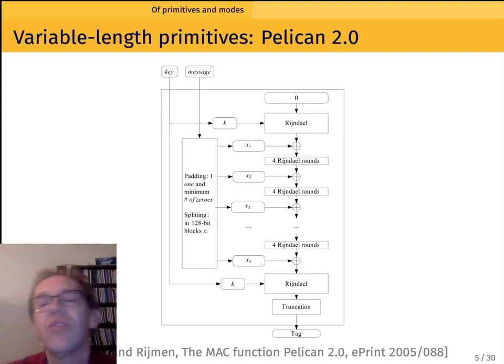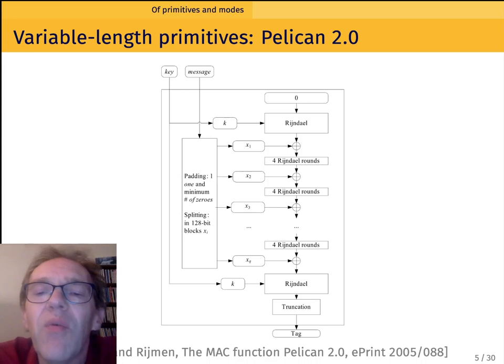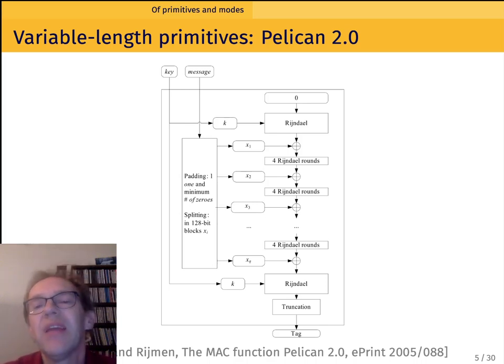One such construction goes back to my work with Vincent Rijmen. As you know we did the AES together, but later we did some other work. One of these other things was Pelican Mac. Pelican Mac is a Mac function based on AES, Rijndael, that only requires four rounds per additional block of plaintext, so per additional block of message to Mac.